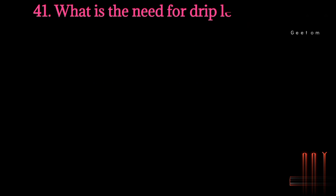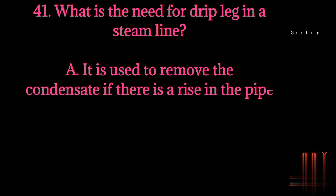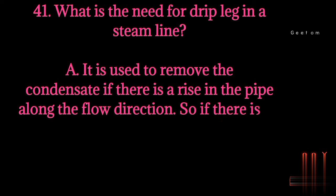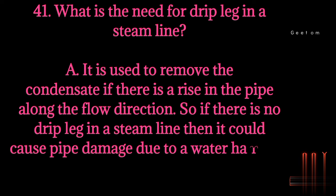Question 41: What is the need for drip leg in a steam line? Answer: It is used to remove the condensate if there is a rise in the pipe along the flow direction. If there is no drip leg in a steam line then it could cause pipe damage due to water hammer.